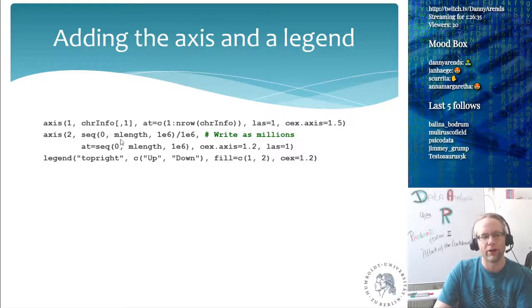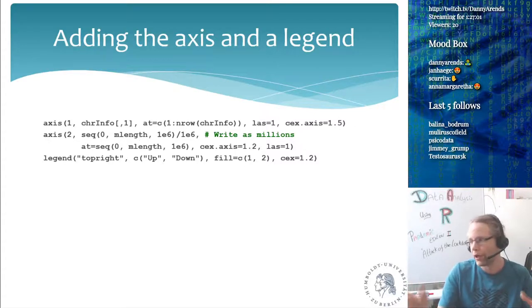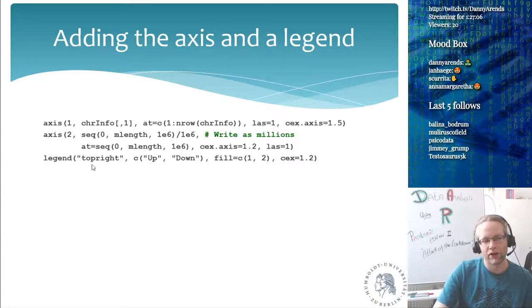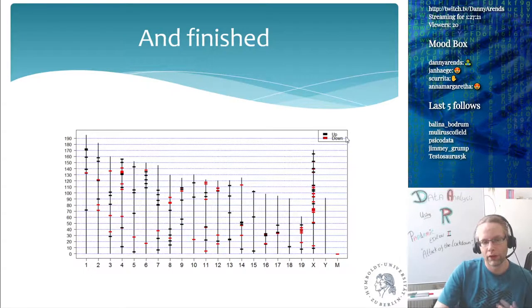And then on the second axis, I'm going to add the position 0 to the maximum length. I'm going to step by a million, divide it by a million, so I'm just going to put every million base pairs, I'm going to put a number, but I don't want the number to be like with 6 or 7 zeros behind it, I'm just going to divide out this million. And then at these positions, I'm going to write the length, instead of writing down one million, I'm just going to write one. And then of course, I want to have a legend on the top right of the plot, and it would say up and down, because the ratio is either above or below. And then I'm going to say, use the fill function 1 and 2, and make the CEX 1.2. So then, in the end, it will look like this. So, I have my legend here, I now have my chromosomes here, and here you see the mega base pair positions of each of the chromosomes.